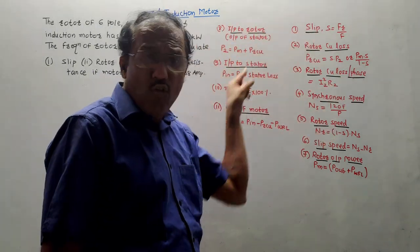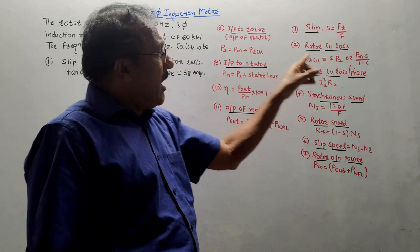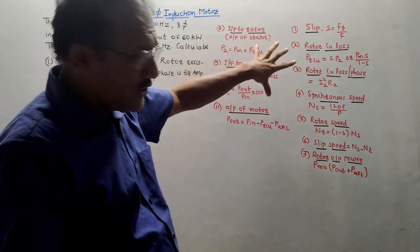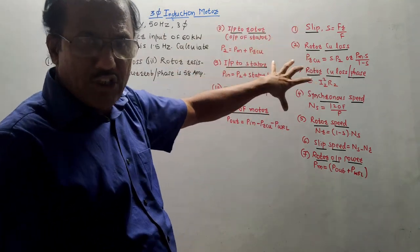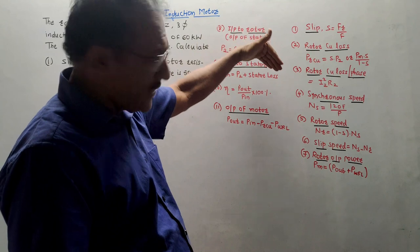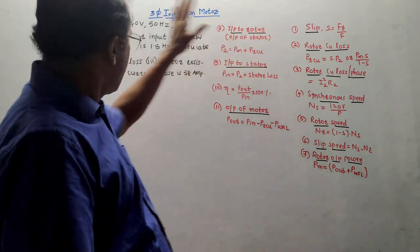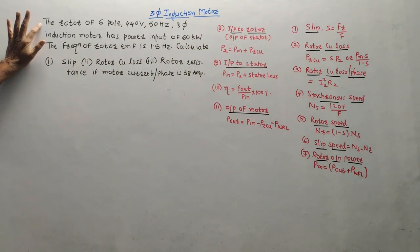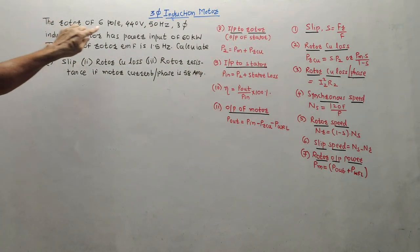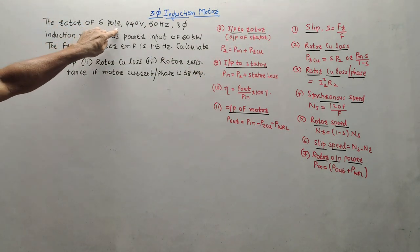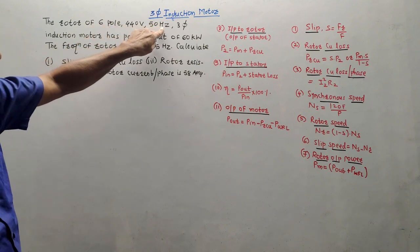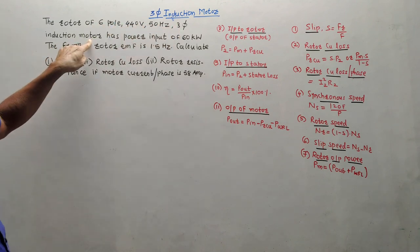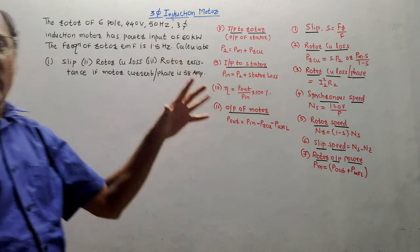This is the list of formulae. While solving the numerical, I will explain the meaning of each and every notation. Without wasting time, let us start the session. The first numerical is: the rotor of a 6-pole, 440 volts, 50 hertz, 3-phase induction motor.